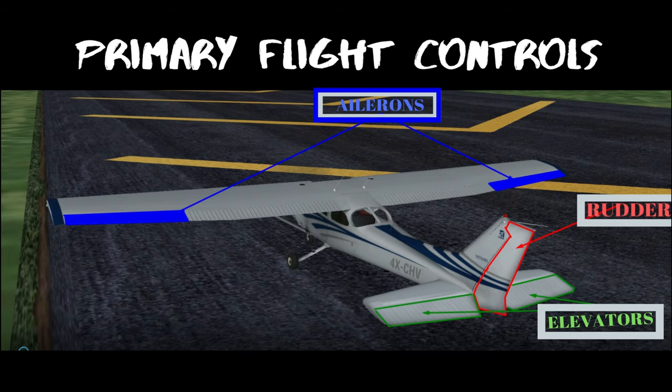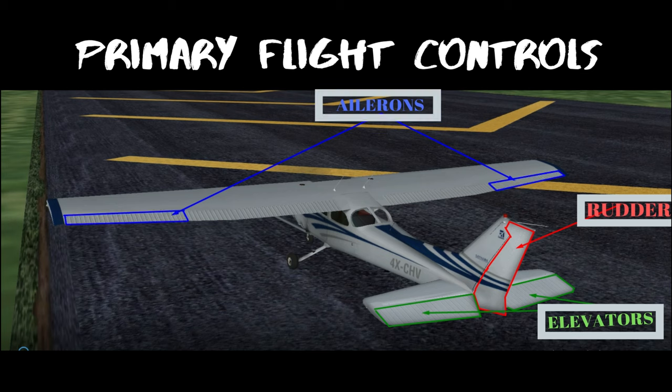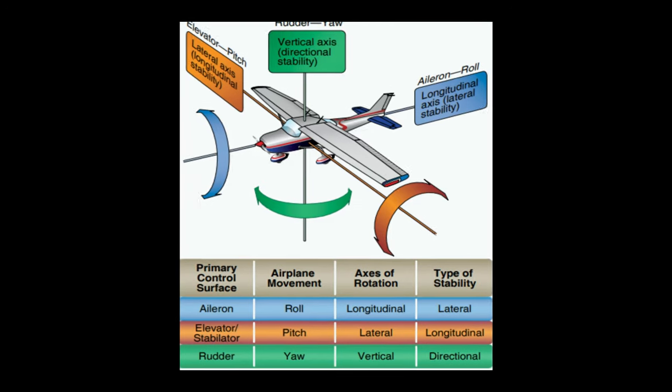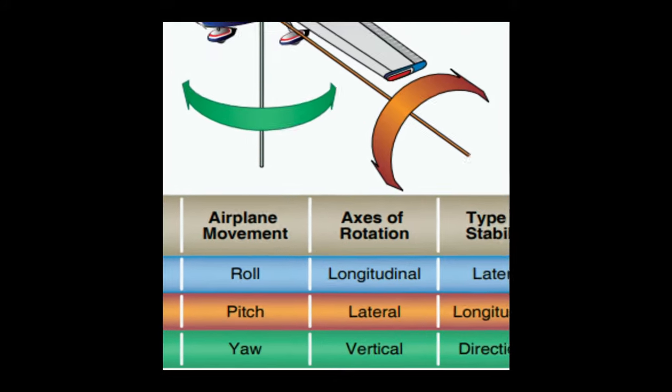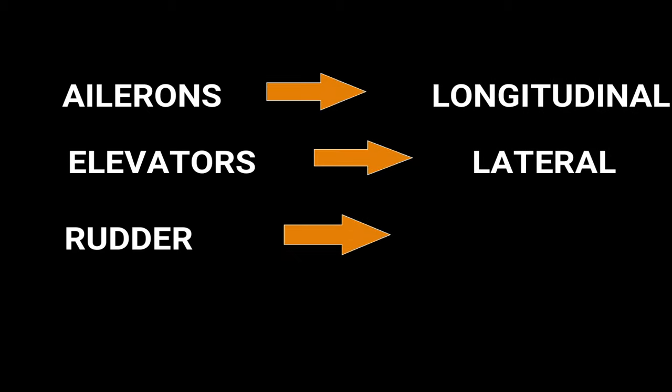One last quick tip: notice that we came alphabetically—ailerons, elevators, and rudders. When we normally talk of the axes, we say it longitudinal, lateral, and vertical. I don't know why, but we do say it like that. So if we go alphabetically like ailerons, elevators, and rudders, then it will be easier to remember because they respectively rotate the aircraft about longitudinal, lateral, and vertical axis.